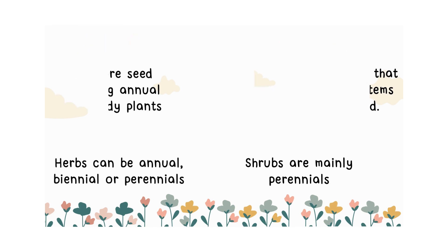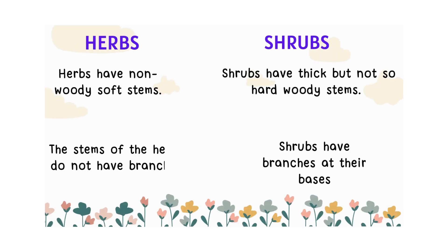Whereas shrubs are mainly perennials. Herbs have non-woody, soft stems; shrubs have thick but not so hard woody stems. The stems of herbs do not have branches, whereas shrubs have branches at their bases.